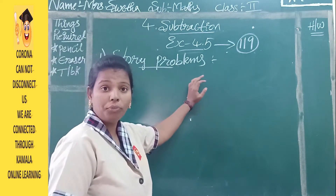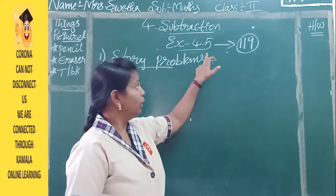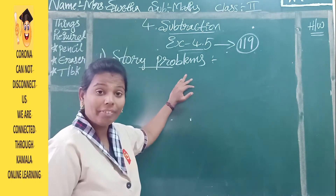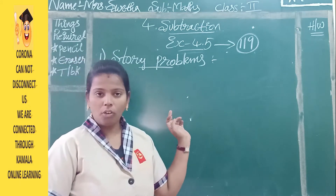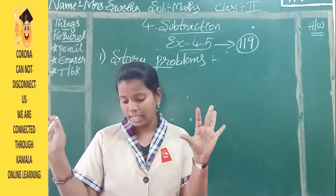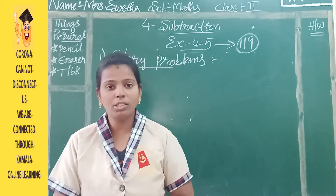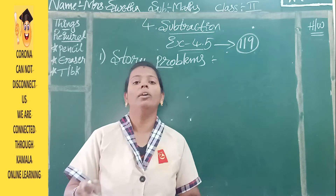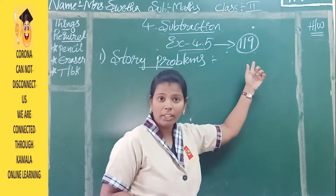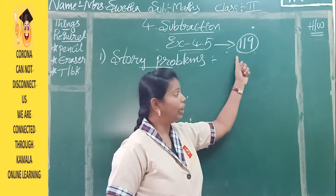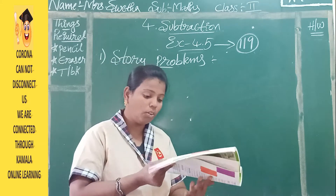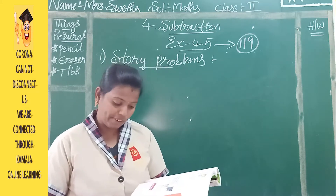We are going to start with exercise 4.5. In this exercise you are having story problems. This is also the same as your subtractions, but here a story is given. You have to read that story, understand it, and then do the subtraction. These story problems are on your page number 119. Open your page number 119.